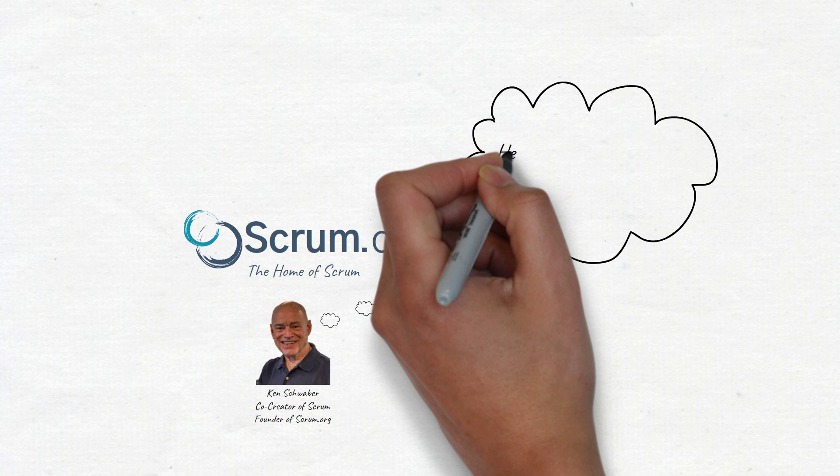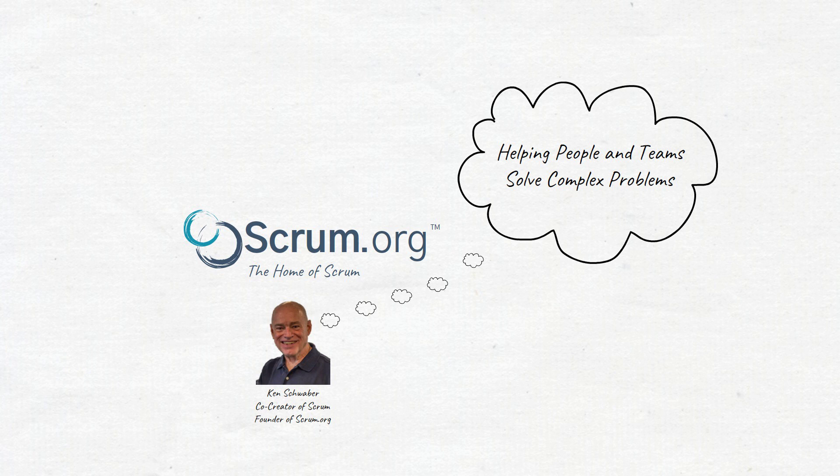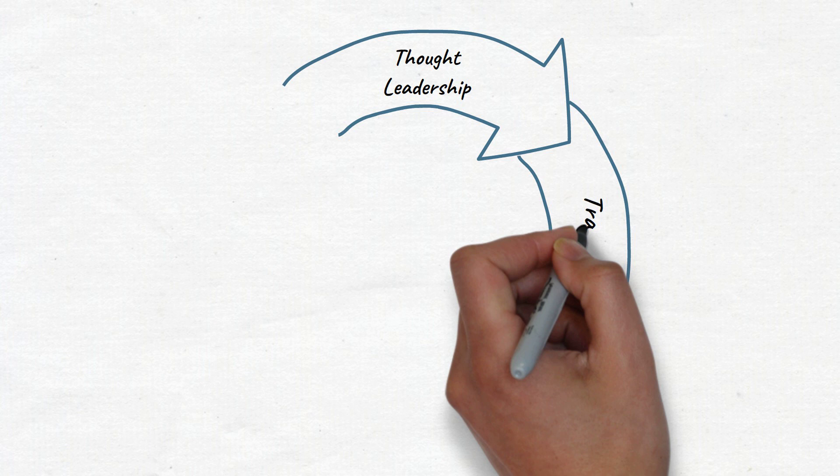Scrum.org was founded in 2009 by Scrum co-creator Ken Schwaber as a mission-based organization focused on helping people and teams solve complex problems. That mission drives everything that we do.